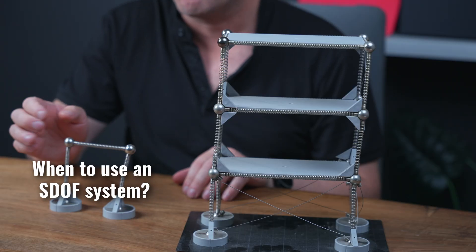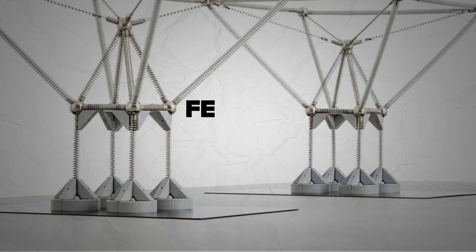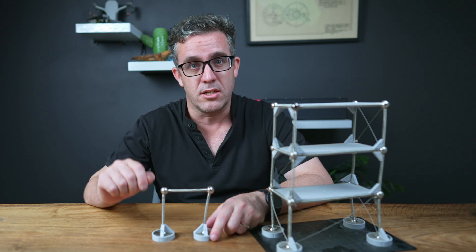So when do we need to use a single degree of freedom system? When do we need to use a multi-degree of freedom system? And how to debug some of those errors? I'll be using this Molar Kit to explain these principles. My name is Brendan, your structural engineer. Now let's get into it.